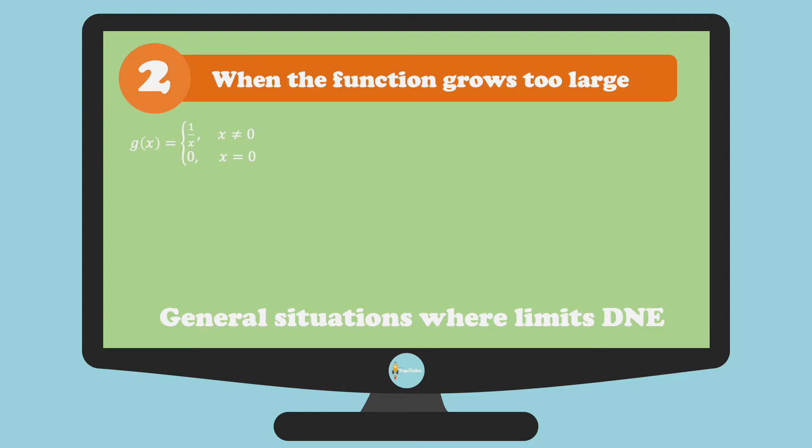g(x) = 1/x for x ≠ 0 and 0 for x = 0. From the graph we see that the limit of g(x) as x approaches 0 from the left is equal to negative infinity.